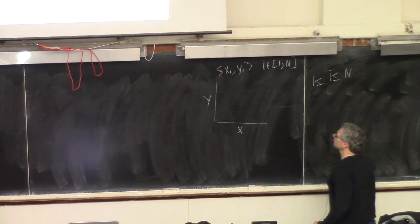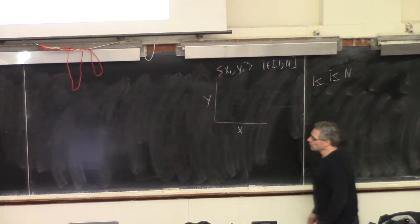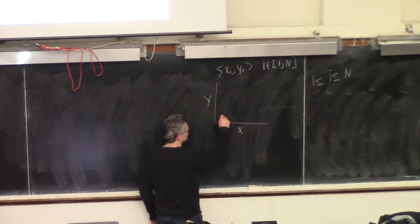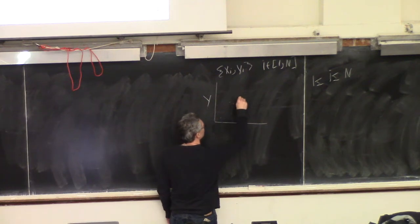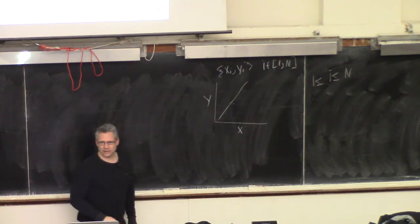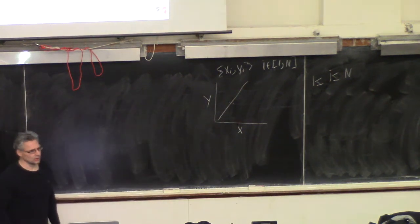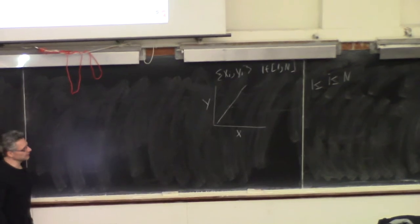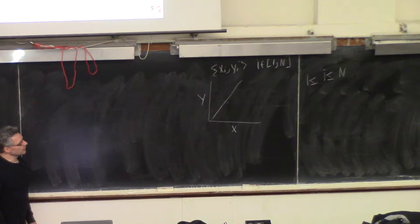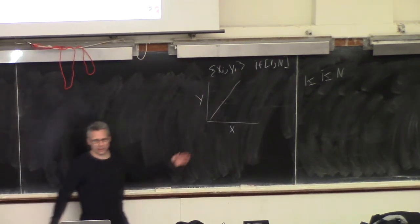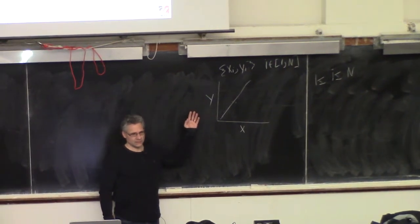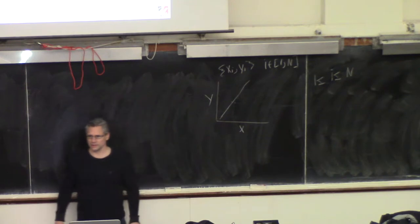So we've done N experiments, collected X versus Y. You guys have done this — you plot your data, get a bunch of data points, and then you might use your calculator to fit a line to the data. It's called linear regression. When you do this, the first assumption you've made is that X and Y are correlated. If you change X, it has some effect on Y. If you change X and it has no effect on Y, you say they're uncorrelated.